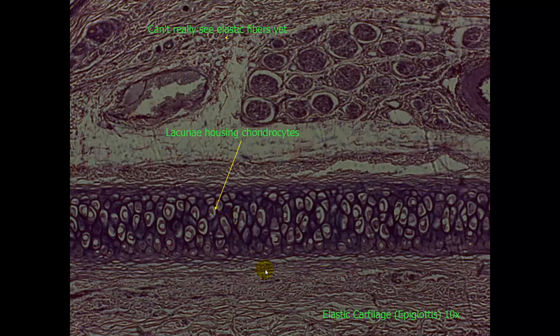Now here is elastic cartilage. This is from the epiglottis. This is a 10x objective. This is the lacunae housing the chondrocytes. This is the elastic cartilage. You can clearly see the lacunae. However, you can't really see the elastic fibers yet. As you get a closer magnification, those will become more apparent.